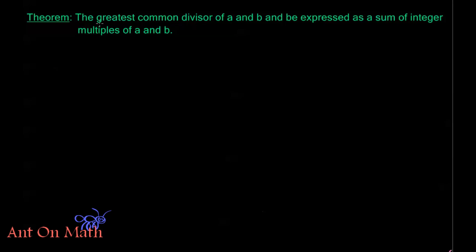Hello and welcome back to Anton Math. We've been talking about GCD and the Euclidean algorithm, and there's one more theorem we want to talk about. That theorem is that the greatest common divisor of A and B can be expressed as a sum of integer multiples of A and B. In other words, we can always write GCD of A and B as a linear combination AX plus BY, where X and Y are integers.